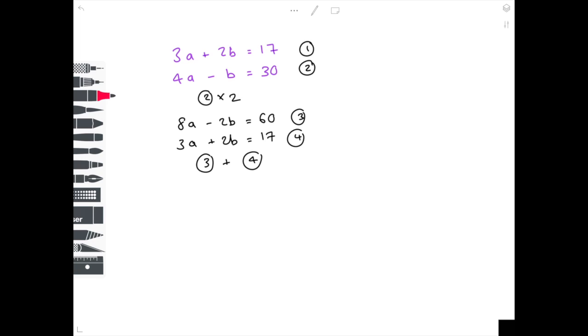What's 8a plus 3a? 11a. Minus 2b plus 2b means that the b's disappear, and then lastly, what's 60 plus 17? Well, that's 77. To get a by itself, we need to divide both sides by 11, so a equals 7.